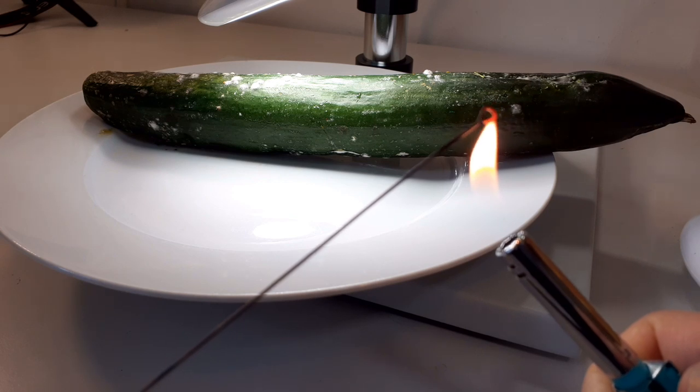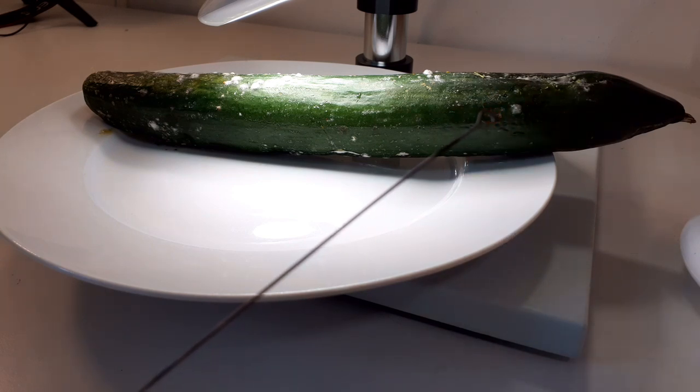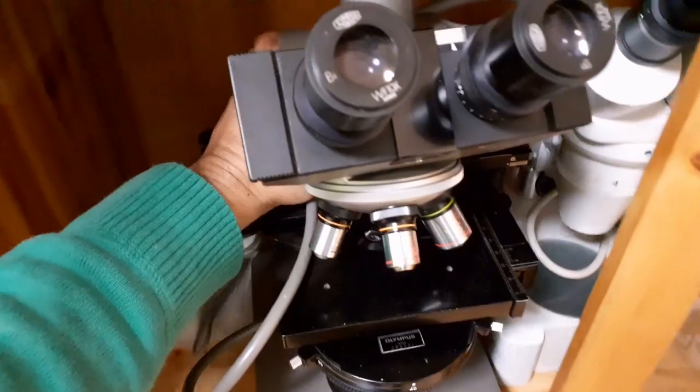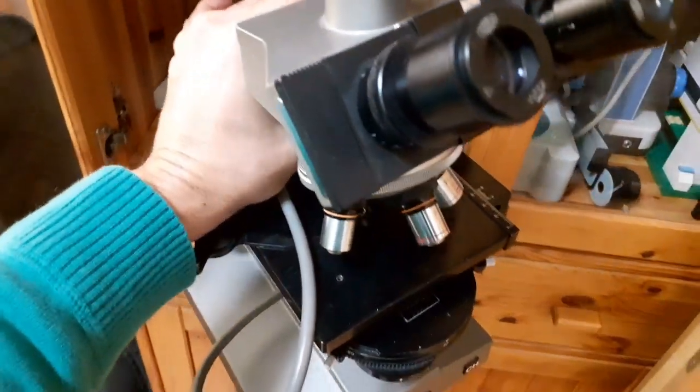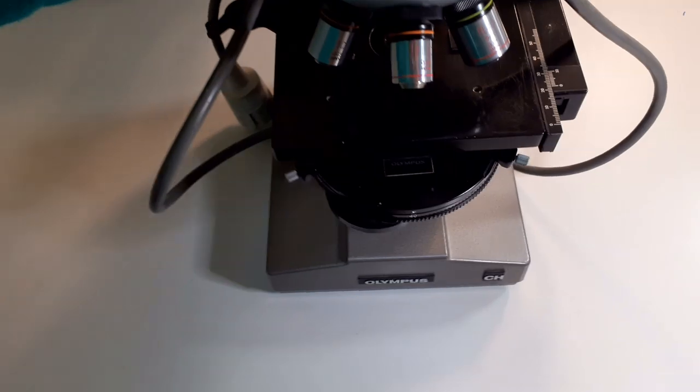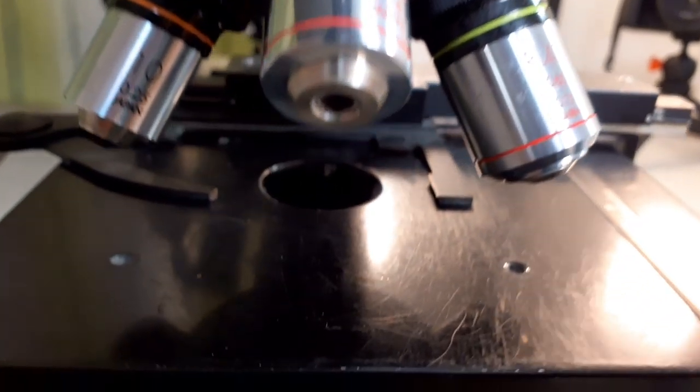And of course I've collected a few more colonies from the cucumber. And also observed them. But then I decided I have to change microscopes. Because I wanted to observe the bacteria now using phase contrast microscopy.